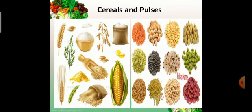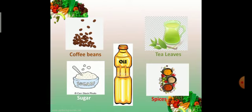We also get cereals and pulses from plants. Cereals like wheat, rice, barley, maize. And pulses like gram, chickpea, kidney beans, rajma, moong and many more. We get coffee beans, tea leaves, sugar, oil and spices from plants.